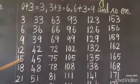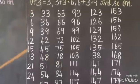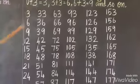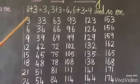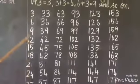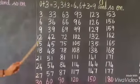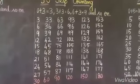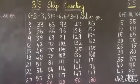9 plus 3, 12. 12 plus 3, 15. 15 plus 3, 18. 18 plus 3, 21. 21 plus 3, 24. 24 plus 3, 27. 27 plus 3, 30. And so on. Dear students, continue the Skip Counting up to 300.